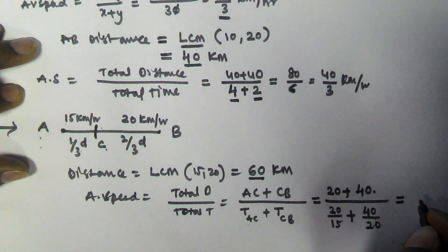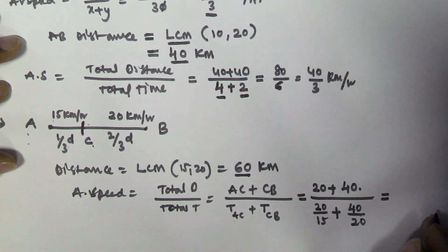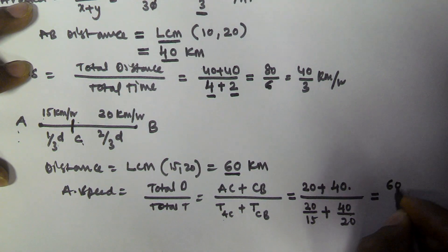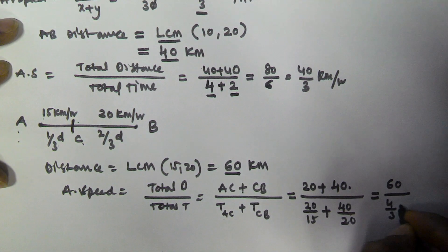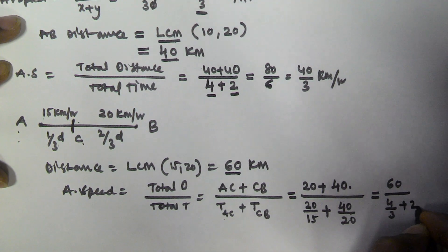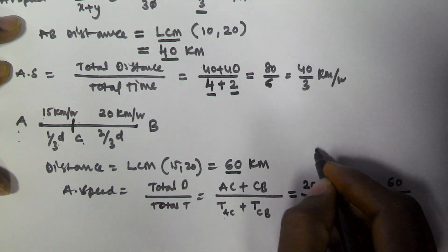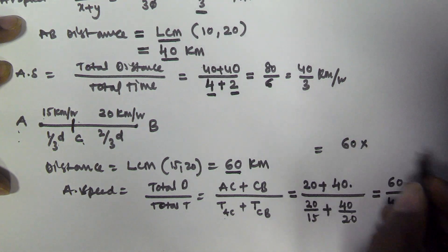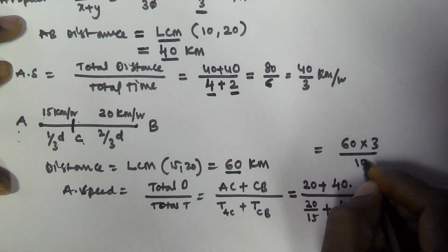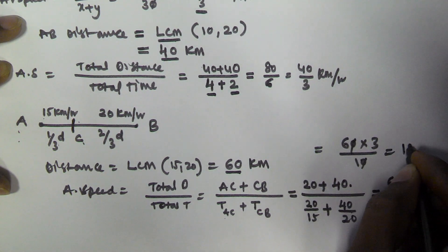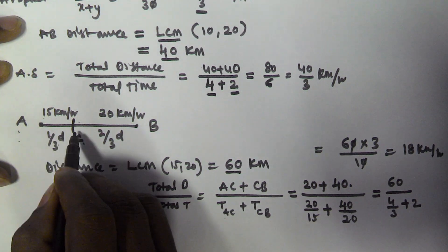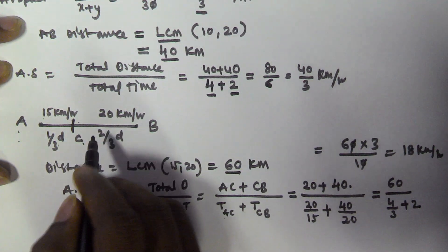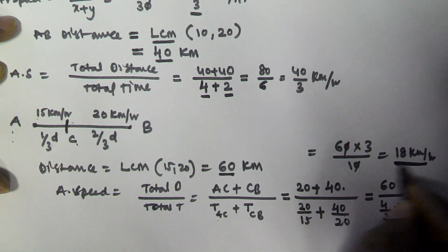Solving: average speed = 60 divided by (20/15 + 40/20) = 60 divided by (4/3 + 2) = 60 divided by (10/3) = 60 × 3/10 = 18 km per hour. So if he travels A to C at 15 km/h and C to B at 20 km/h, the overall average speed is 18 km per hour.